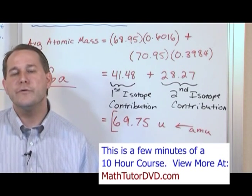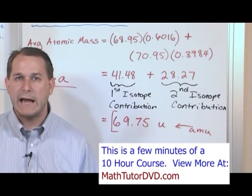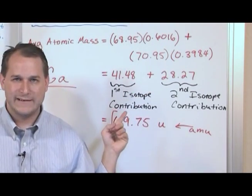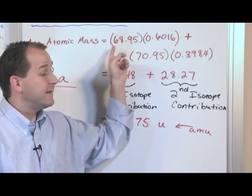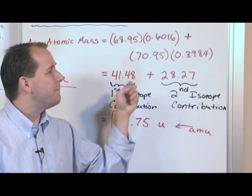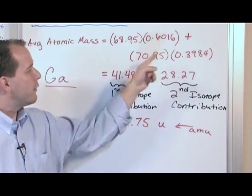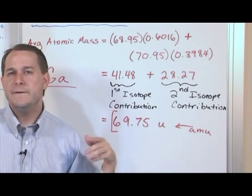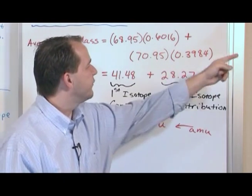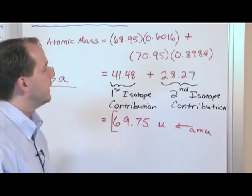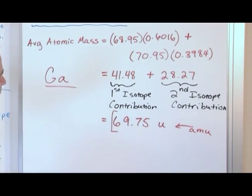This is how all of those numbers on the periodic table are really calculated. They go in nature, they figure out how many isotopes exist, they measure the atomic mass in AMU of all of those isotopes, and then they measure how abundant they all are, and then they do a calculation just like this. In this case, we're saying there's only two isotopes. But if you had 10 isotopes, you would just keep adding on terms with the mass of the isotope times the percent that you have there.